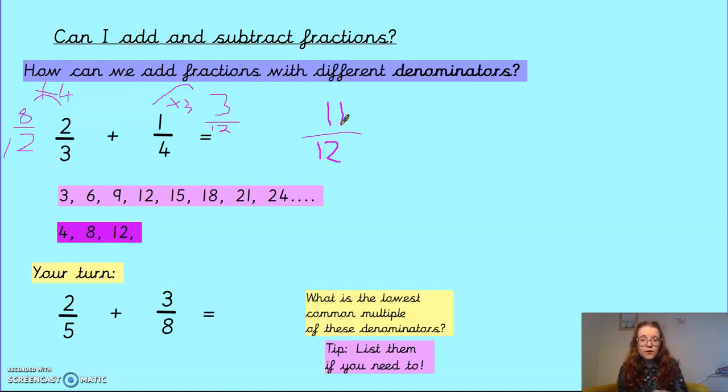Now, if I wanted to, I would simplify my answer. But unfortunately, I can't simplify this. Because the only common factor of 11 and 12 is 1. So I can't simplify it at all. So my answer is going to be 11 twelfths.